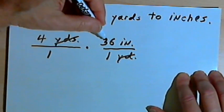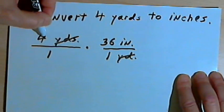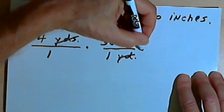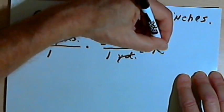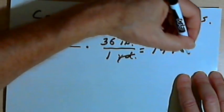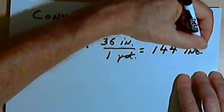Which means I can just multiply the numerators. That's going to be 4 times 36 inches. 4 times 36 is 144, and the unit of measure was inches.